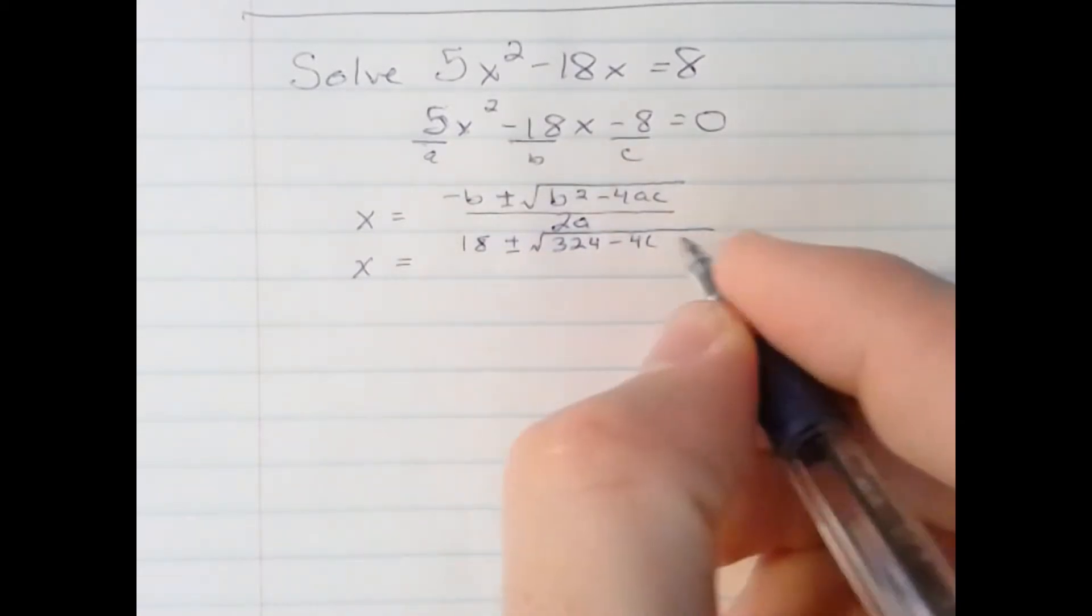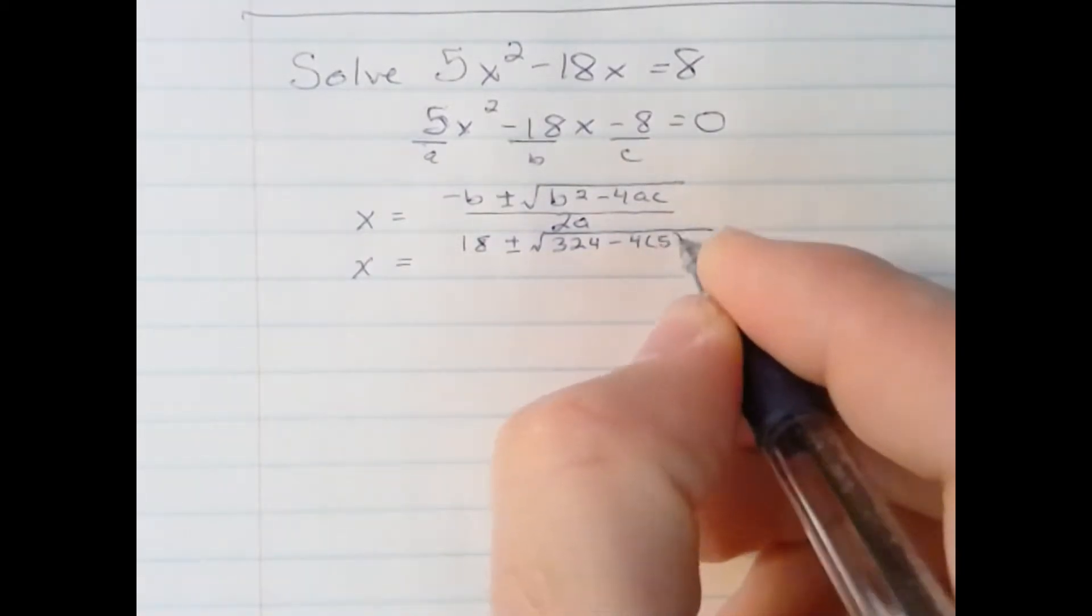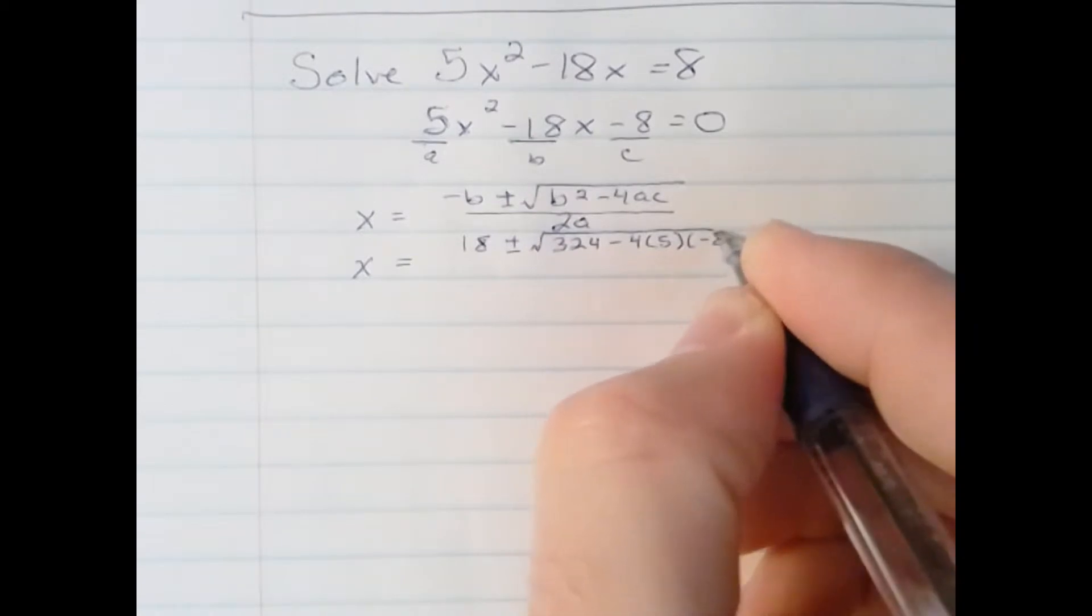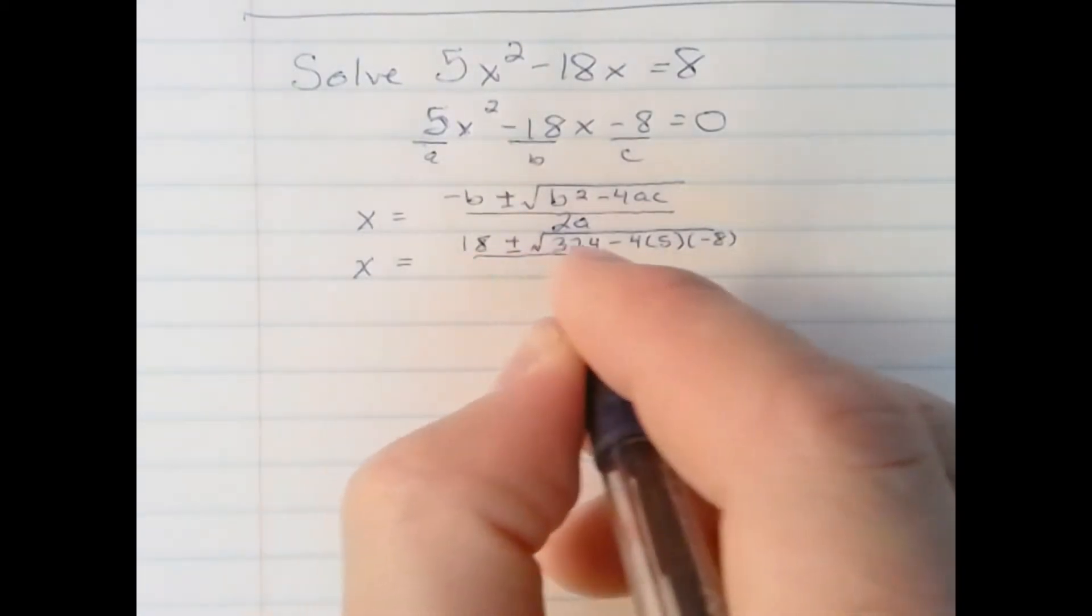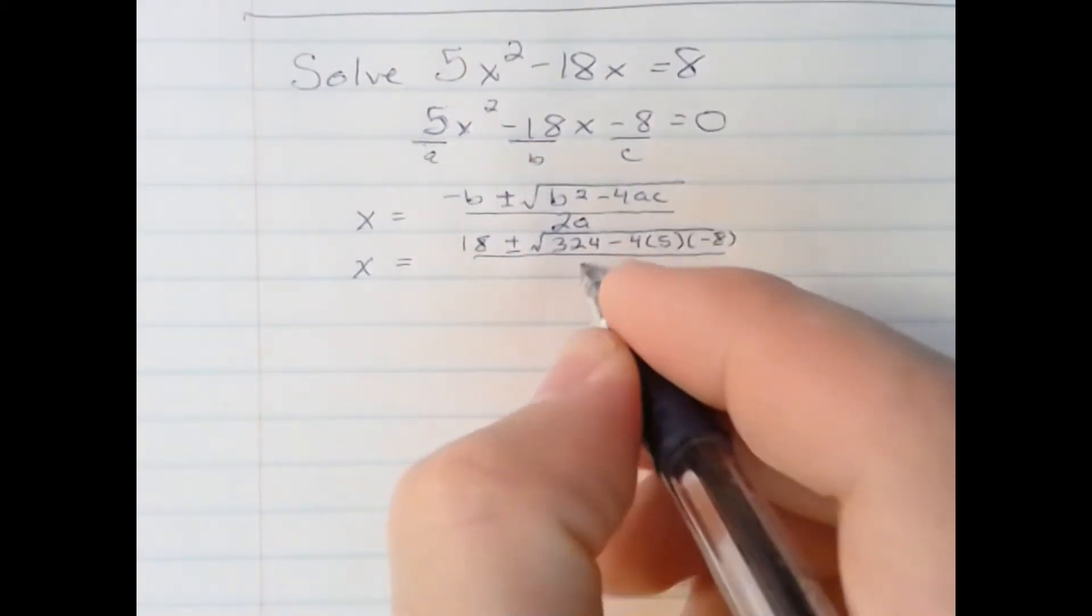Minus 4 times the a term, which is 5, times the c term, which is negative 8. All over twice the a term, which would be 10.